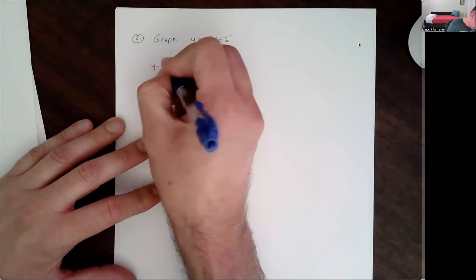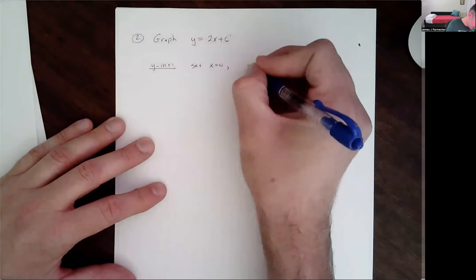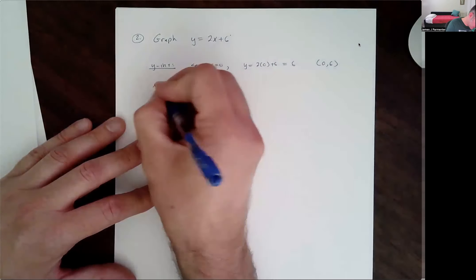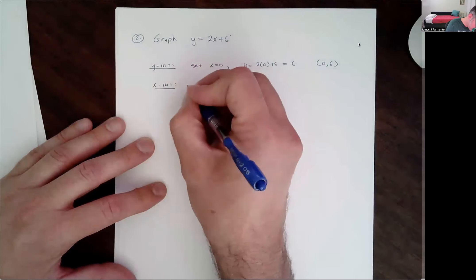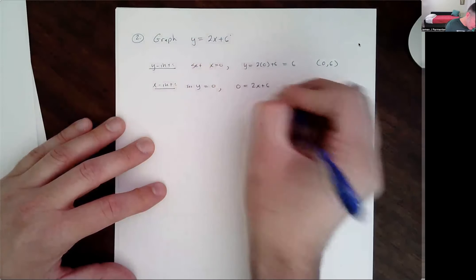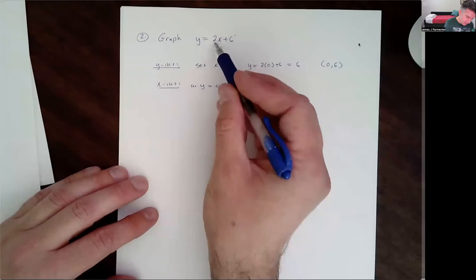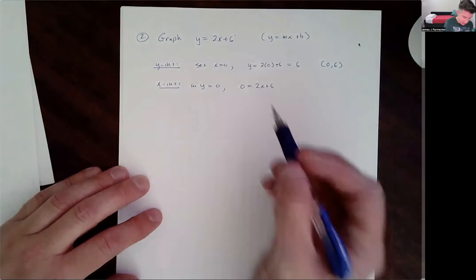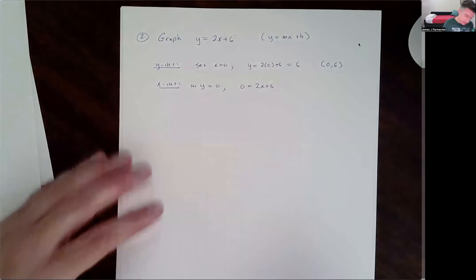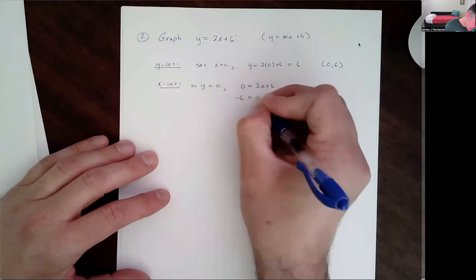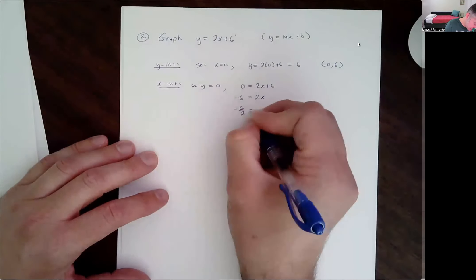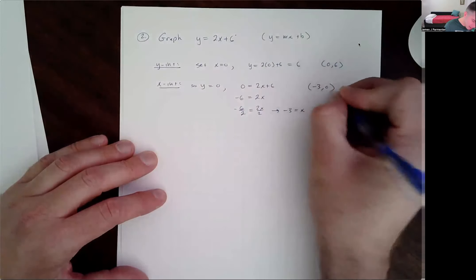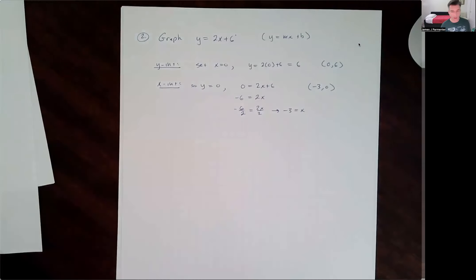So y-intercept: if I set x equal to 0, I get y equals 2 times 0 plus 6, which equals 6. My y-intercept is the point (0, 6). X-intercept: set y equal to 0. I get 0 equals 2x plus 6. When lines are written in the y equals mx plus b format — called the slope-intercept format — it's usually really easy to find the y-intercept. Usually the x-intercept is a little more work. Subtract 6 from both sides: negative 6 equals 2x. Divide both sides by 2: negative 3 equals x. So my x-intercept is the point (-3, 0).